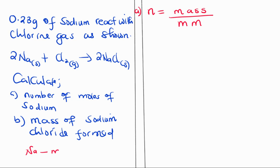For sodium, the mass given is 0.23 grams and the molar mass for sodium on the periodic table is 23 grams per mole. So we proceed and put 0.23 grams divided by 23 grams per mole.